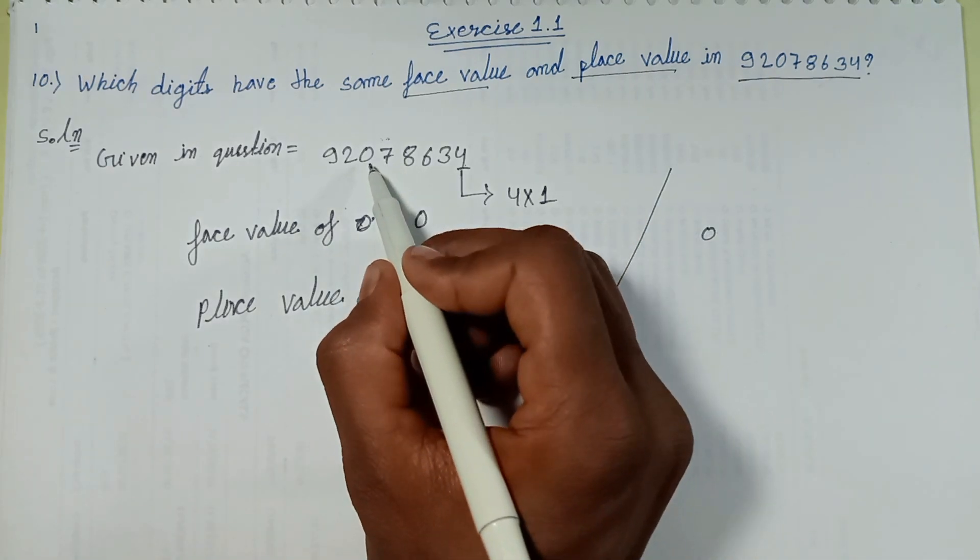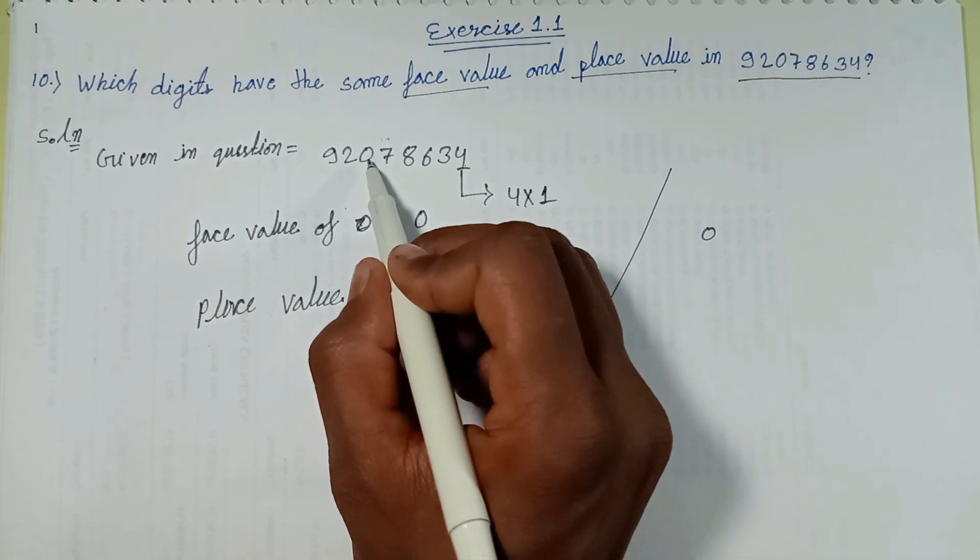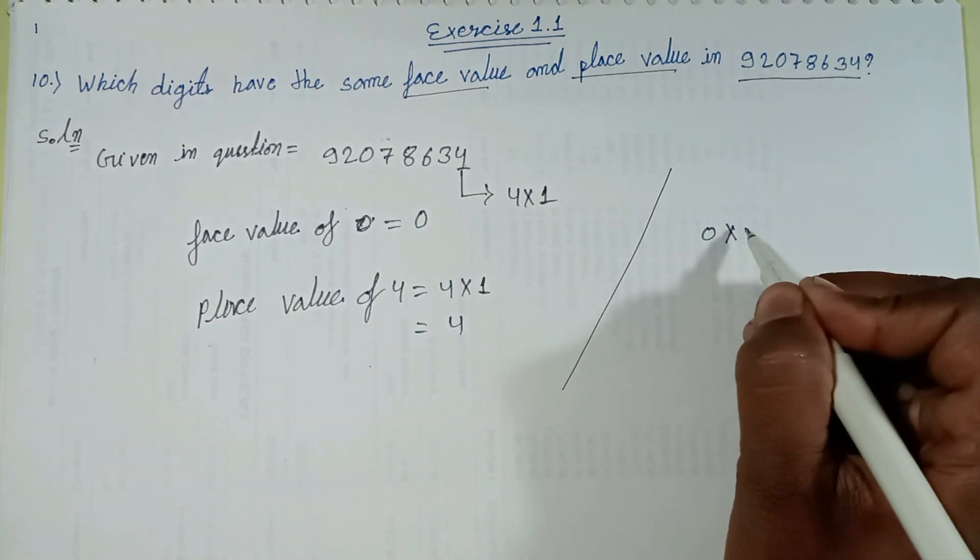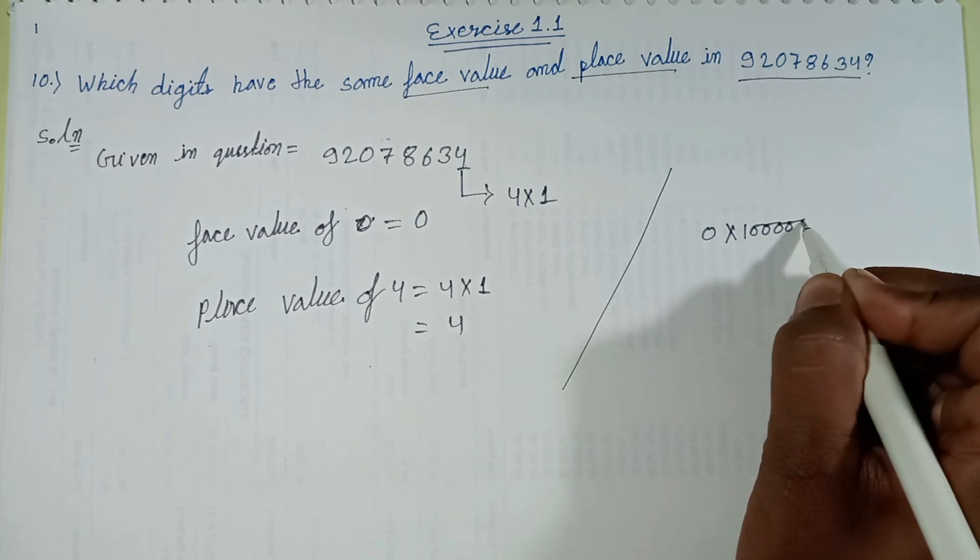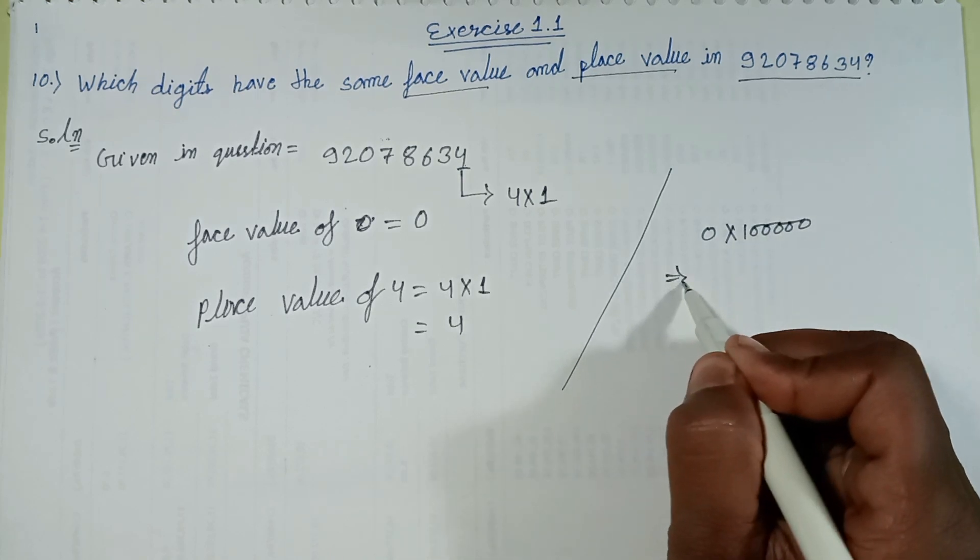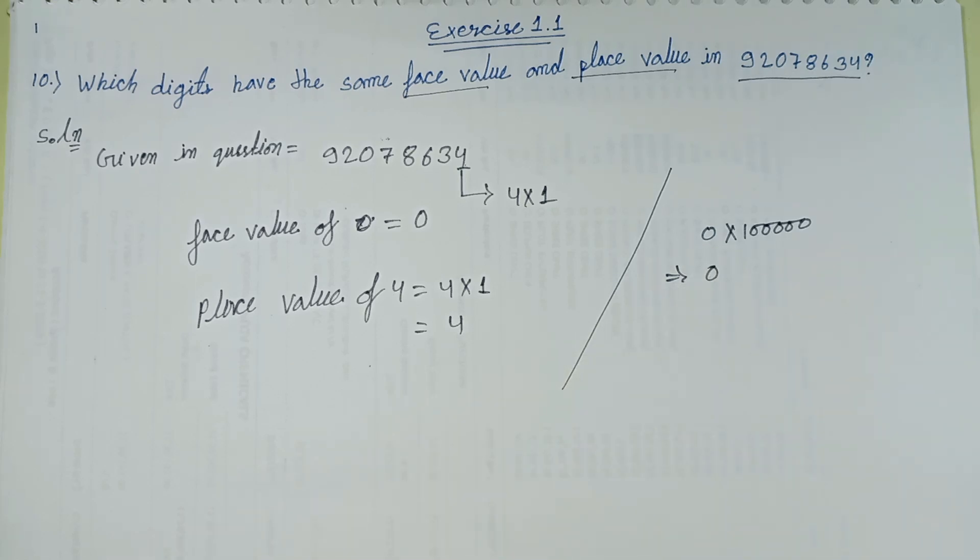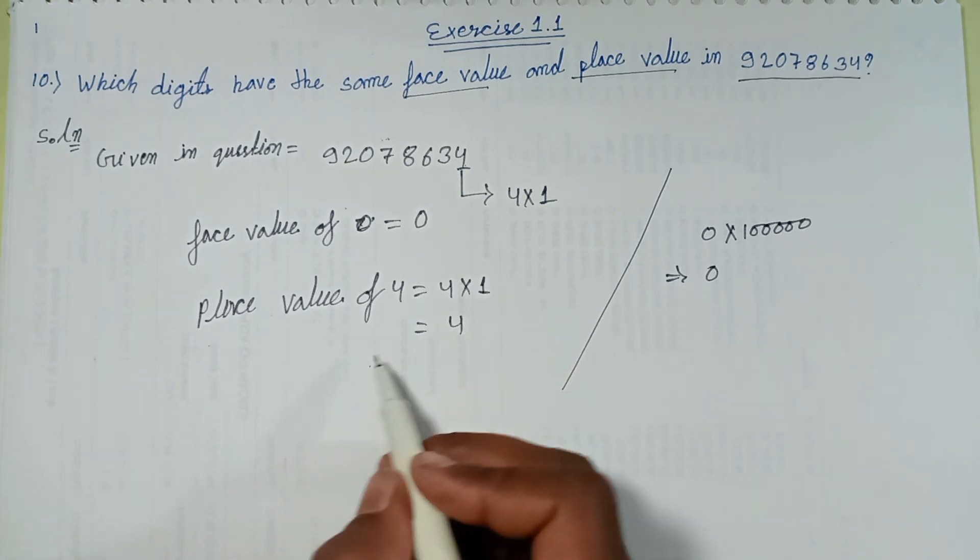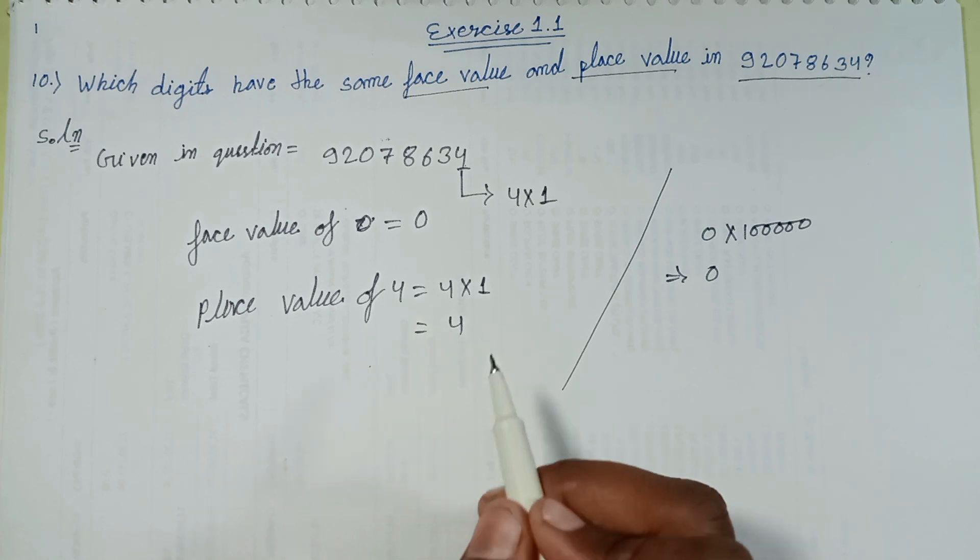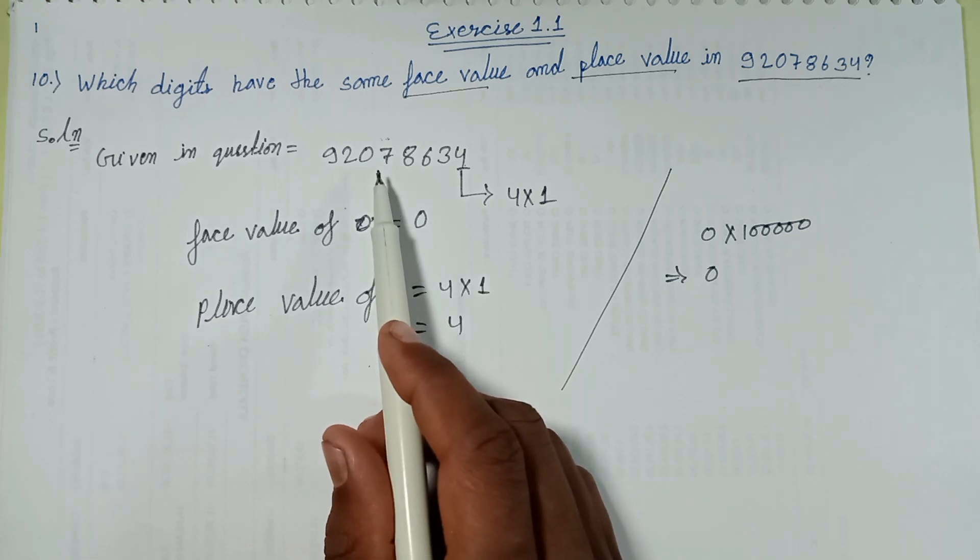Let's find place value of zero: hundred thousand, ten thousand, lakh, ten, lakh place, multiplied with zero comes to the answer zero. First value of four is four. Four is a unit's place. Zero is a lakh place. Place value of zero is zero.